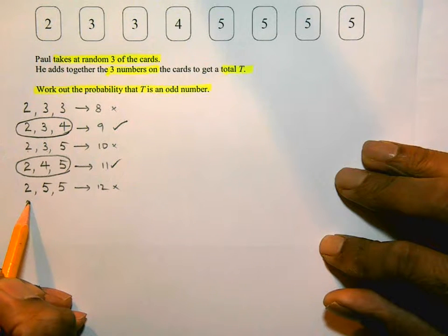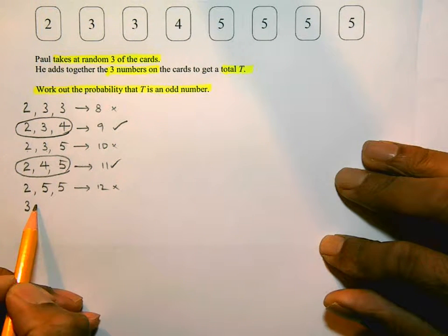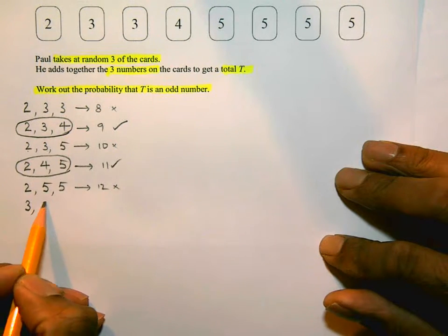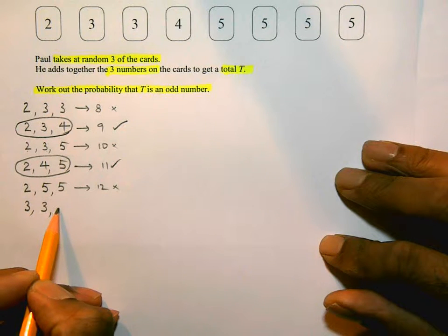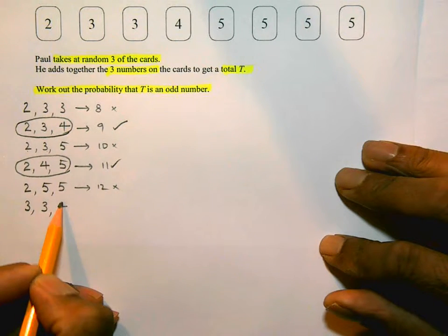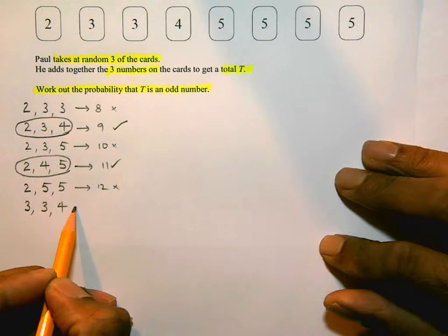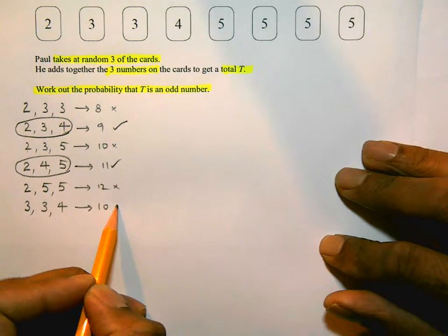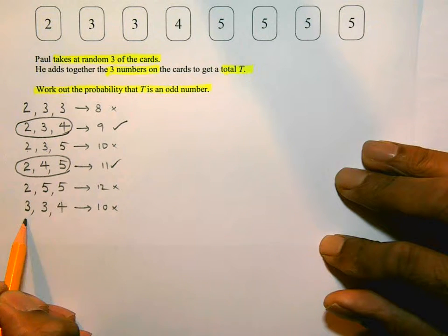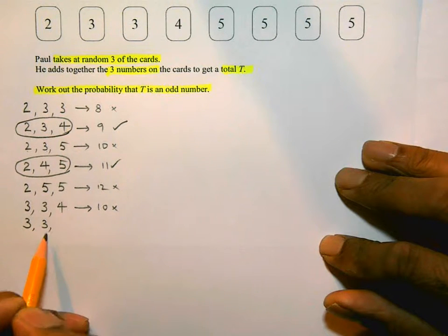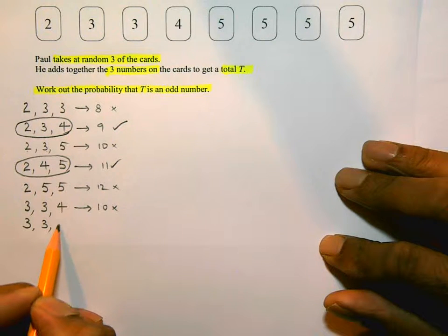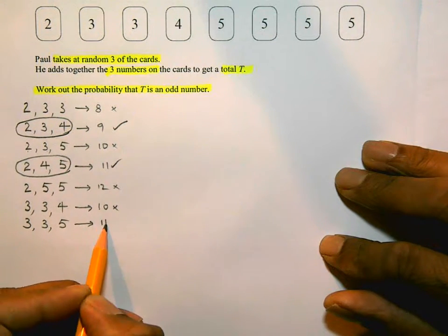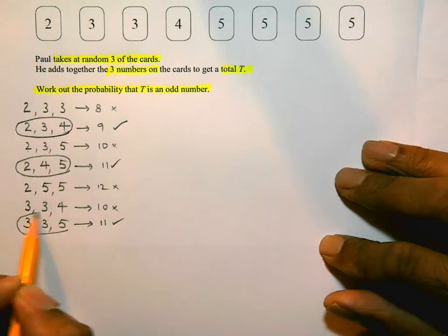Now starting with if he picks a 3 first. Because there are two 3s, he could also pick a 3 second. With 3 third card being a 4, that adds up to 10, which is even — not interested. But if he picks a 3 first and a 3 second, he could get a 5 as his third card. That adds up to 11, which is odd, and that's one I'm interested in.